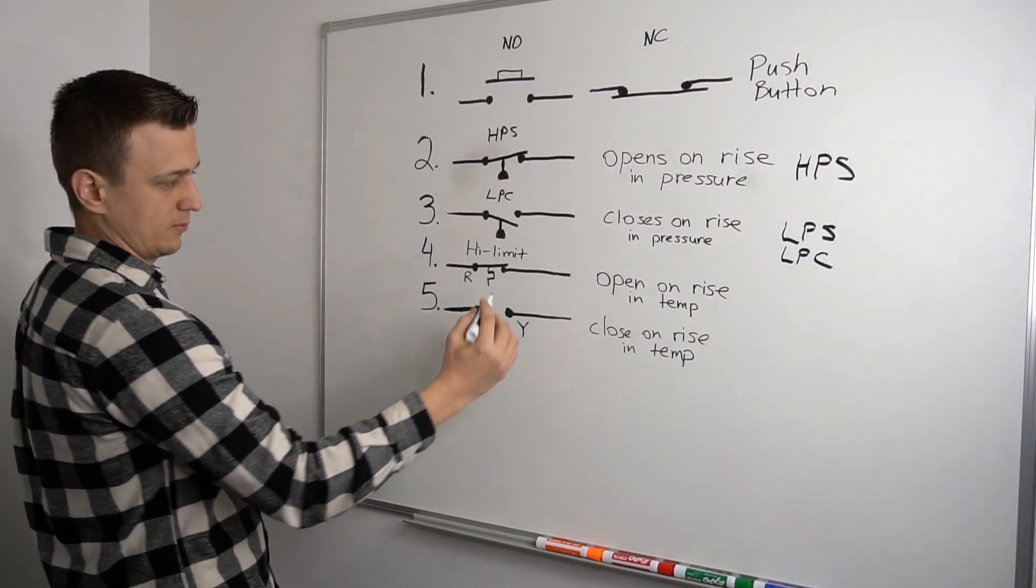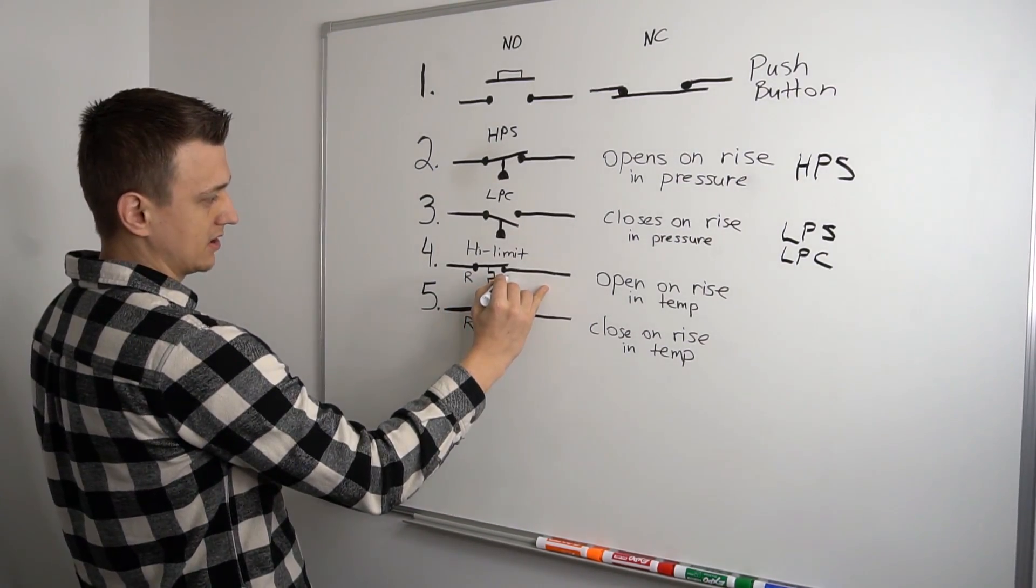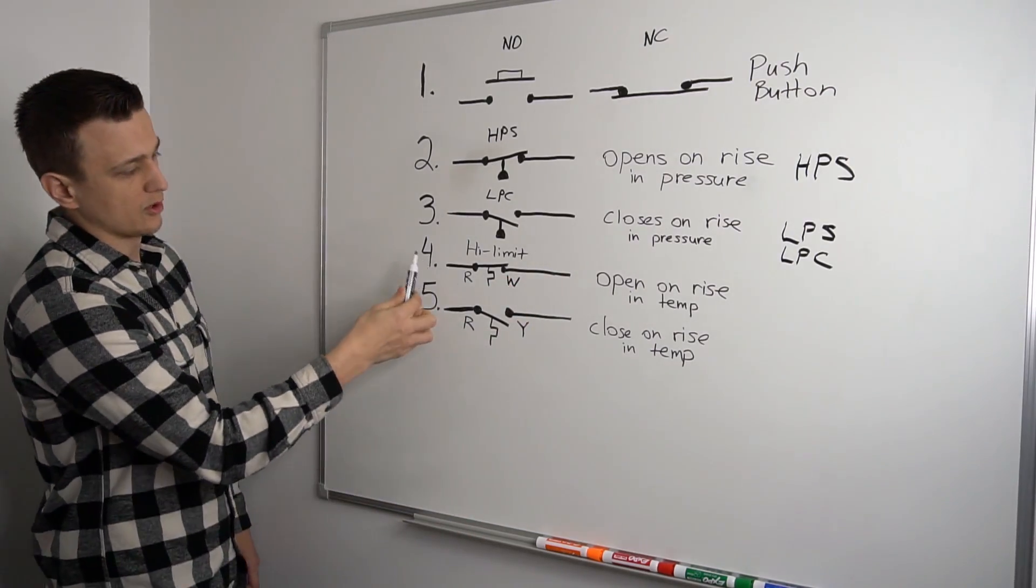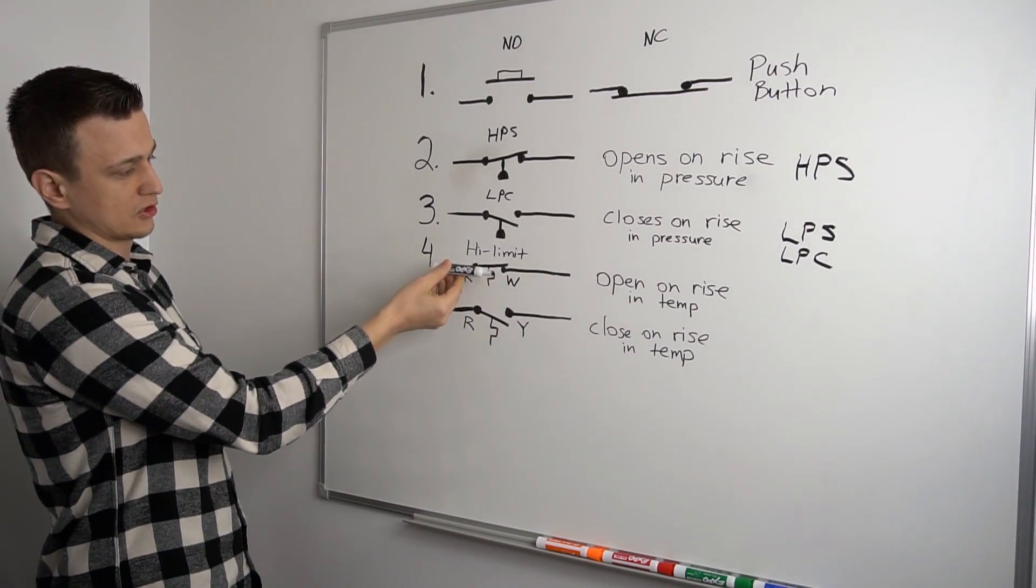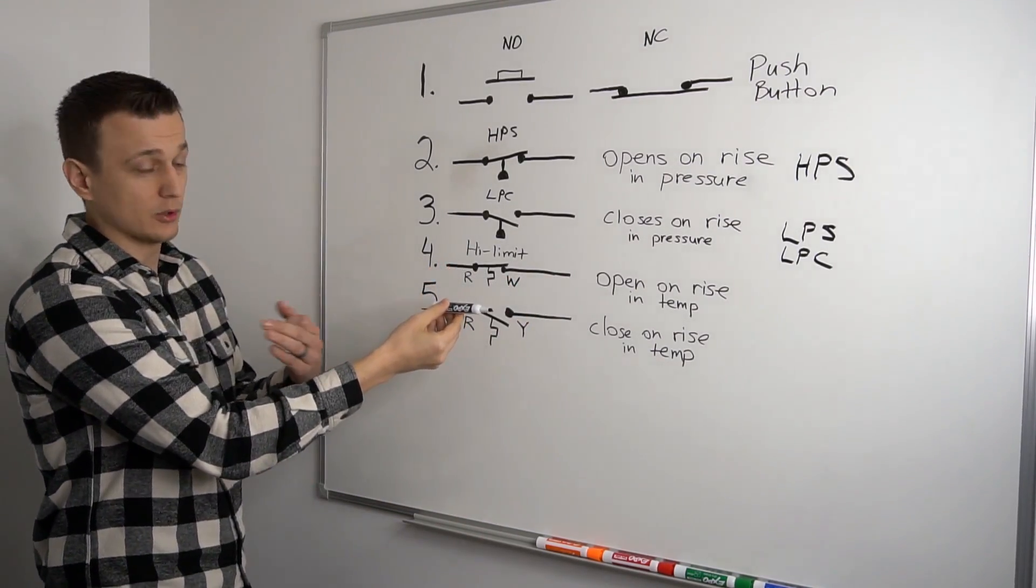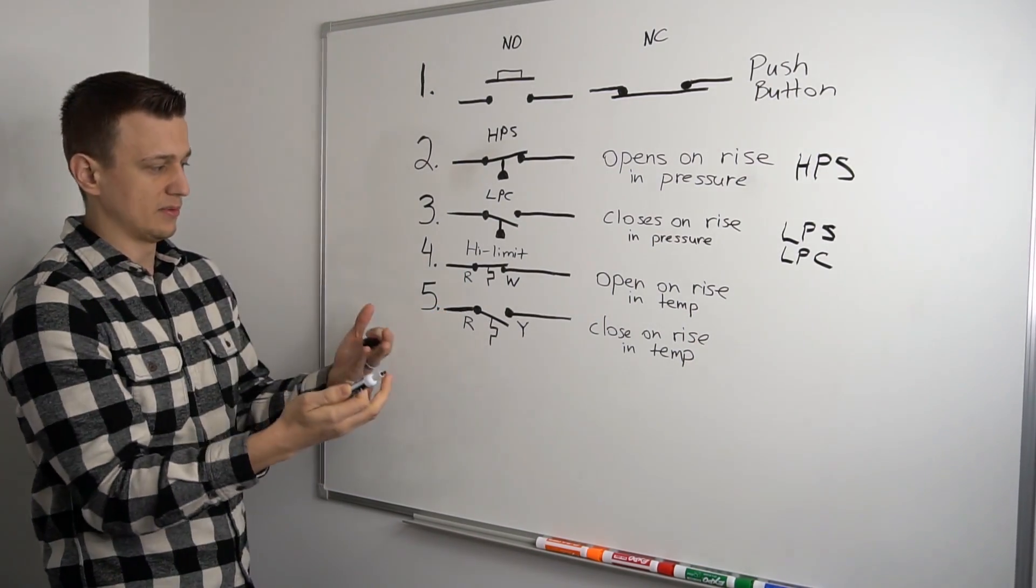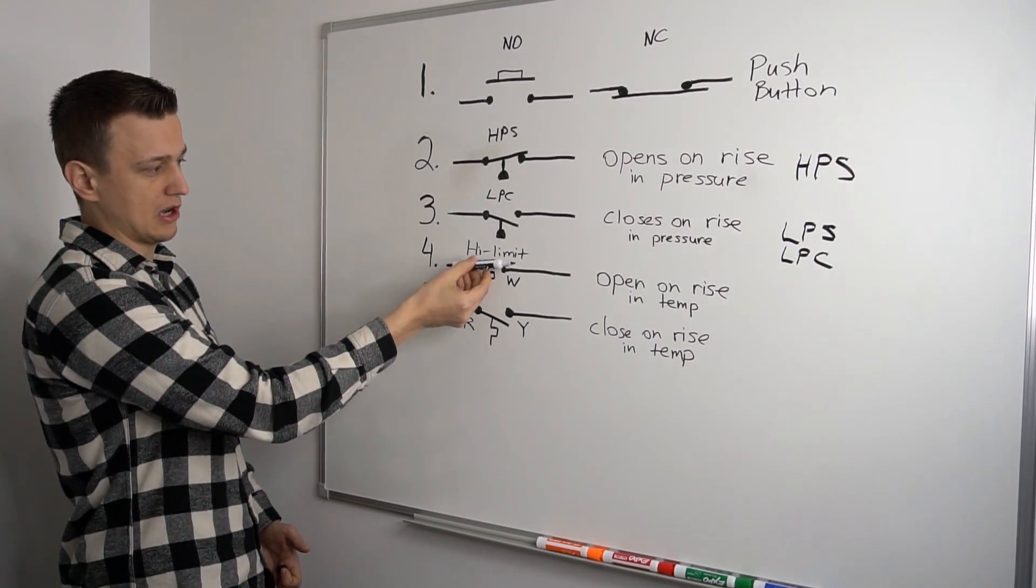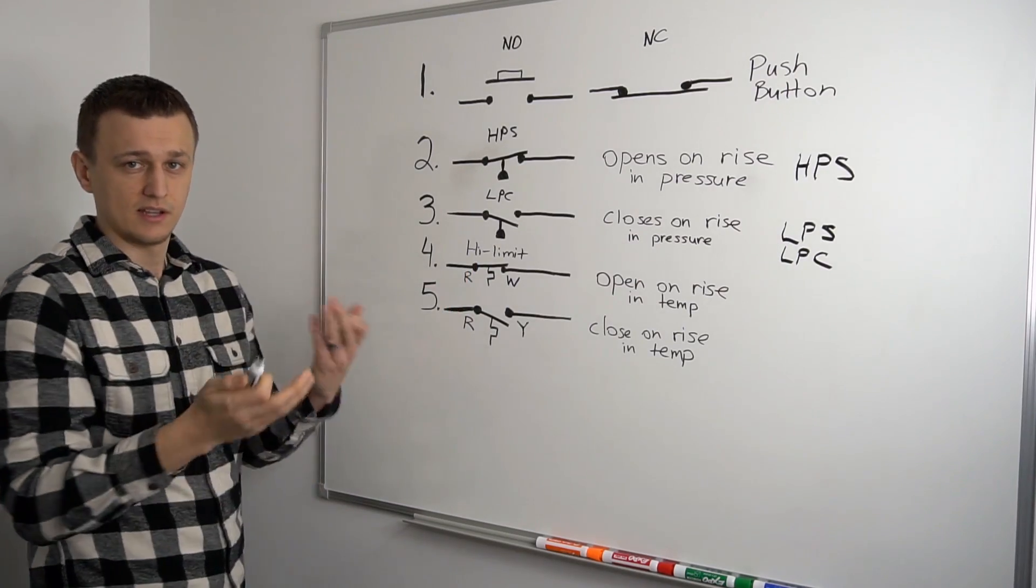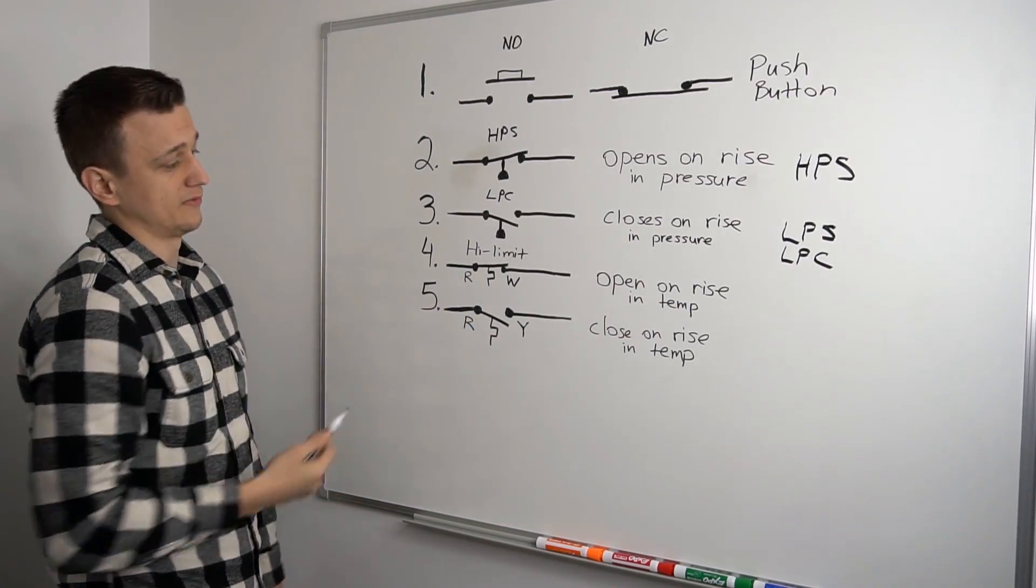Similarly, in the winter, when your furnace is running, this would be W. When your furnace is running, this is closed. If the temperature in the house is getting hotter, the thermostat senses that temperature. And this switch goes up and opens up, interrupting the circuit and turning off the furnace.